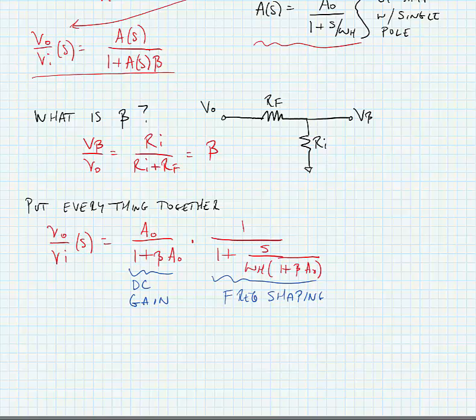Now you can see that the DC gain is not affected by frequency. It's just affected by the finite gain of the operational amplifier. And the frequency shaping term shows a one-pole response, where our pole is a bit different than it was for just the op-amp. In fact, the pole is a little bit bigger.